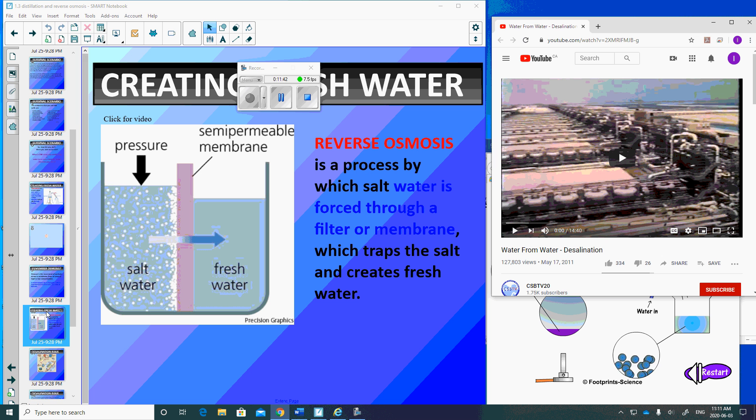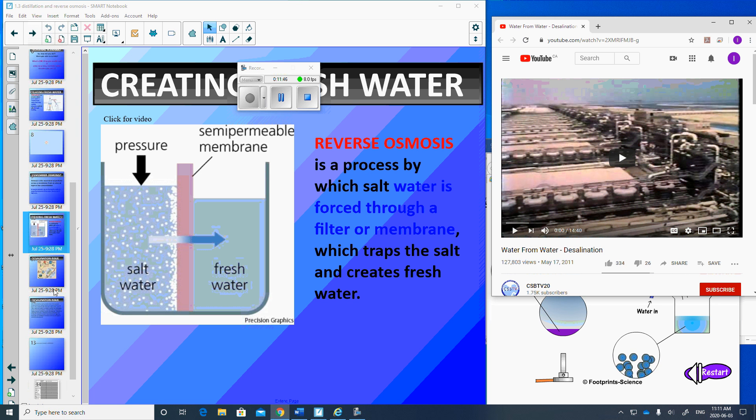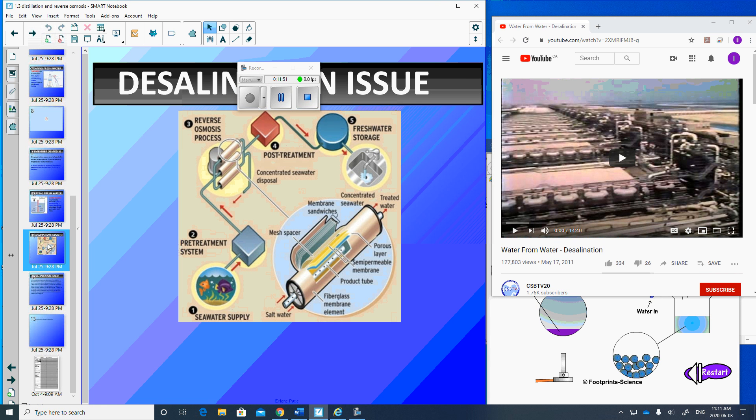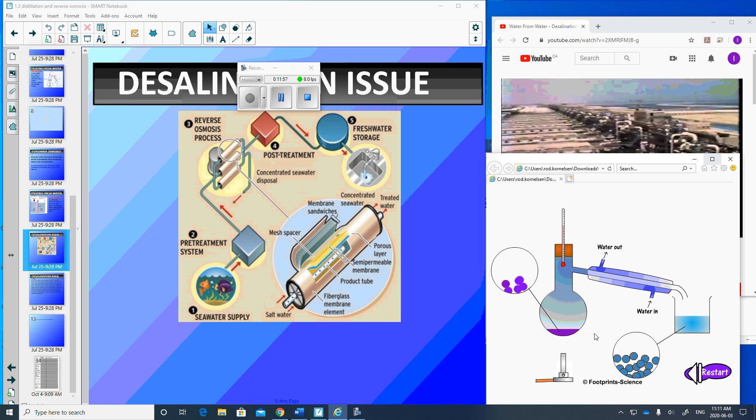So pretty cool that we can turn salt water into fresh water through process of reverse osmosis and distillation. There it is drawn out. You can pause and take a look at that. One more run through how distillation works. Boil the salt water. The water leaves, leaving the salt behind. The pure water recondenses and drips into the beaker as fresh water.